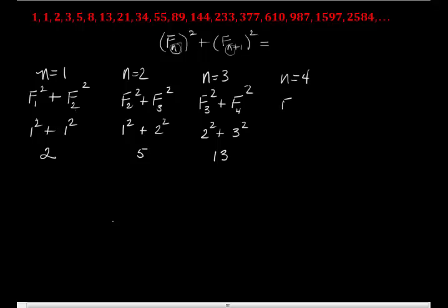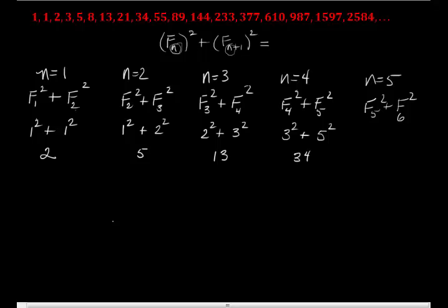When n equals four, the expression becomes F_4 squared plus F_5 squared. The fourth Fibonacci is three and the fifth is five, so three squared plus five squared is nine plus twenty-five, which is thirty-four. When n equals five, we get F_5 squared plus F_6 squared. The fifth Fibonacci is five and the sixth is eight, so five squared plus eight squared is twenty-five plus sixty-four, which is eighty-nine.